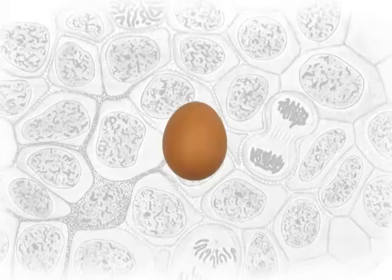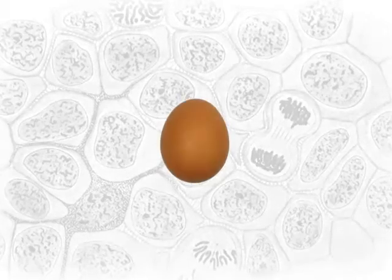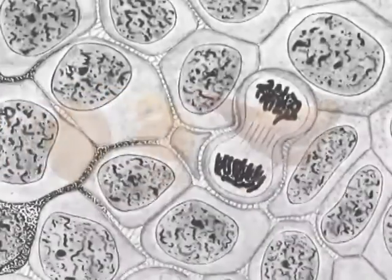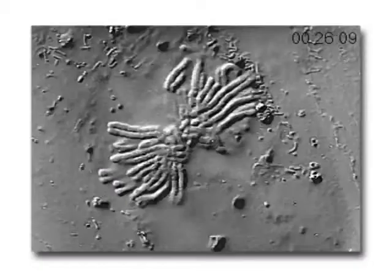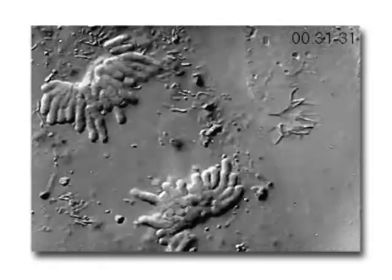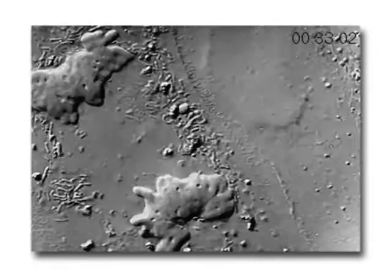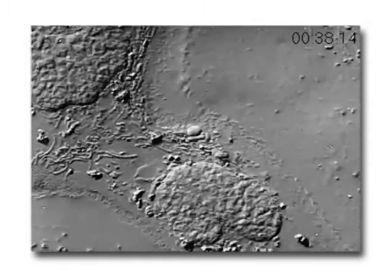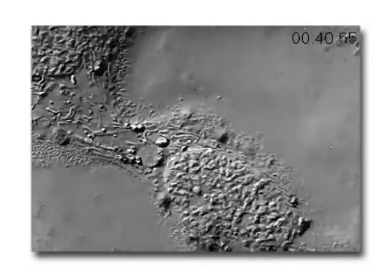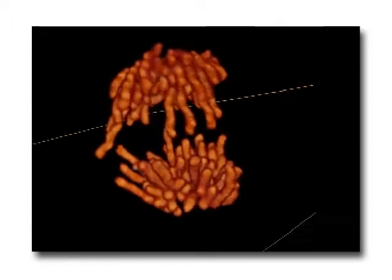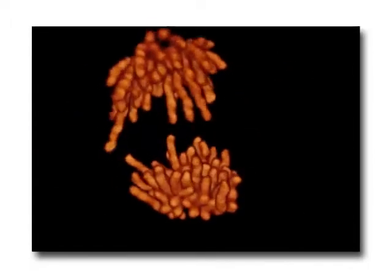Cell division is required for an organism to grow, mature, and maintain tissues. During the mitotic phase, a cell will undergo mitosis to form two new nuclei, and then divide to form two new individual cells during cytokinesis. Mitosis is the process of dividing the duplicated DNA of a cell into two new nuclei.